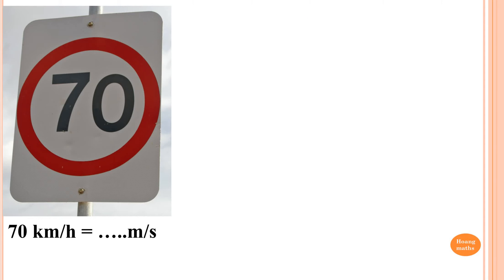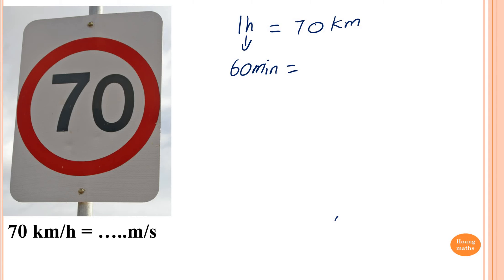Look at this one: 70 kilometers per hour, convert into meters per second. So 1 hour gives me 70 kilometers. So 1 hour is 60 minutes. So 60 minutes — I convert to meters, times by 1,000, because 1 kilometer is 1,000 meters. Therefore, times by 1,000 gives me 70,000 meters.